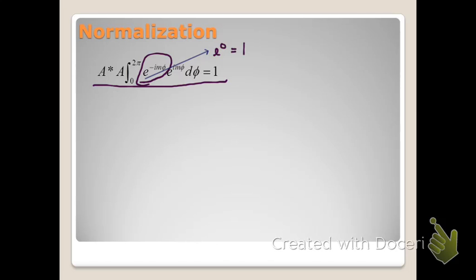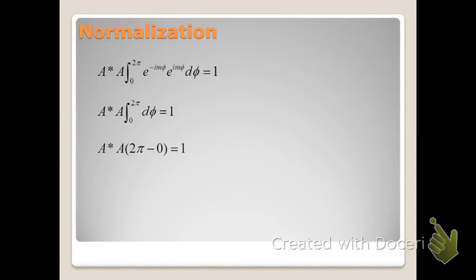If we carry through this expression, it's easy to see that the multiplication of the two exponential terms gives us e to the zero, which equals 1. This simplifies our expression a great deal. This is a very simple integral to evaluate.